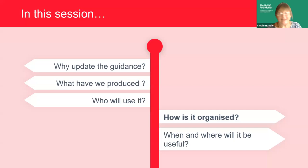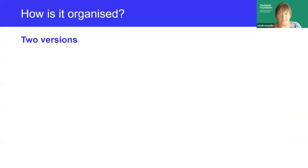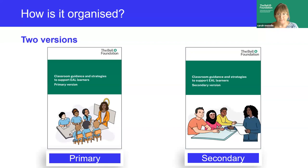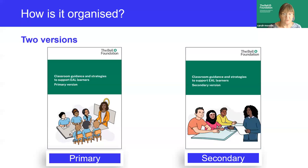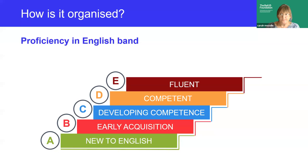Let's look at how it's organised. The guidance is separated into primary and secondary phases and includes age-appropriate examples from all key stages. The guidance for each phase is available as a separate downloadable document. But don't be afraid to step out of your key stage — if you're in key stage three, for example, you might well find ideas in the primary strategies that are useful, and vice versa. The guidance is organised according to assessment bands A to E, following the EAL assessment framework for schools.